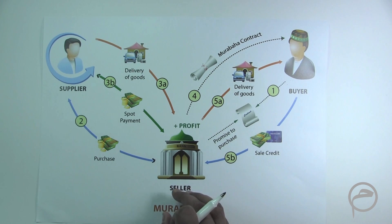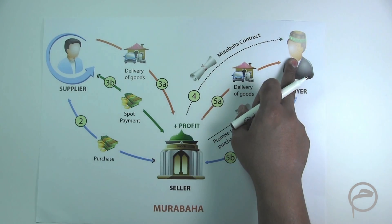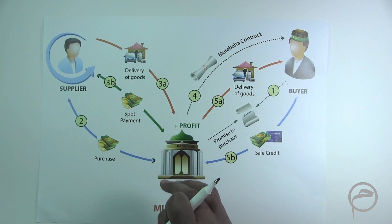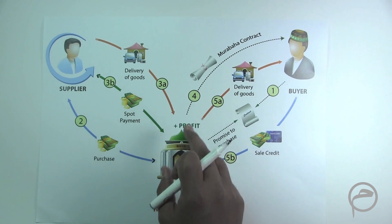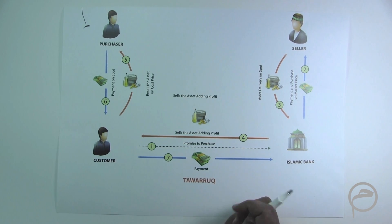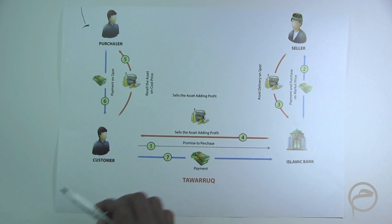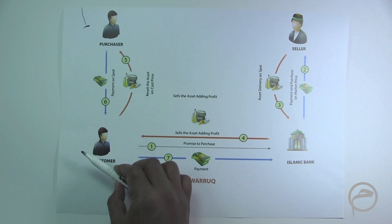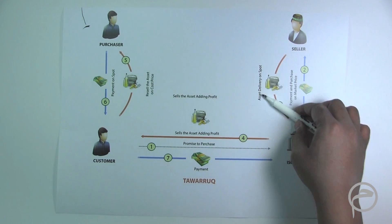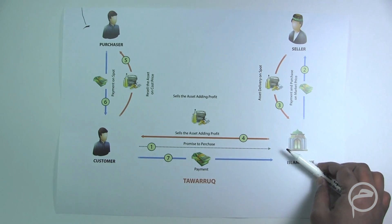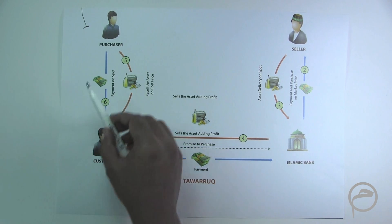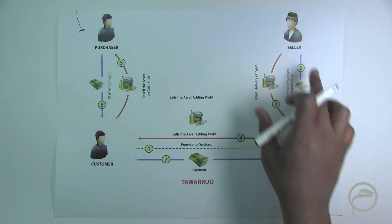In a Musawama transaction, it is not the obligation of the bank to explicitly mention to the customer the amount of profit the bank is making. But in a Murabaha transaction, it is an essential feature that the bank has to explicitly mention to the customer the amount of profit it is making. Now let us look at the third structure — this is a Tawarukh structure, wherein the customer is in need of cash. To fulfill the requirement of the customer, the bank purchases certain identified assets from a seller, then sells them to the customer, and the customer sells those assets to a third-party purchaser and gets the cash. This is a Tawarukh transaction.